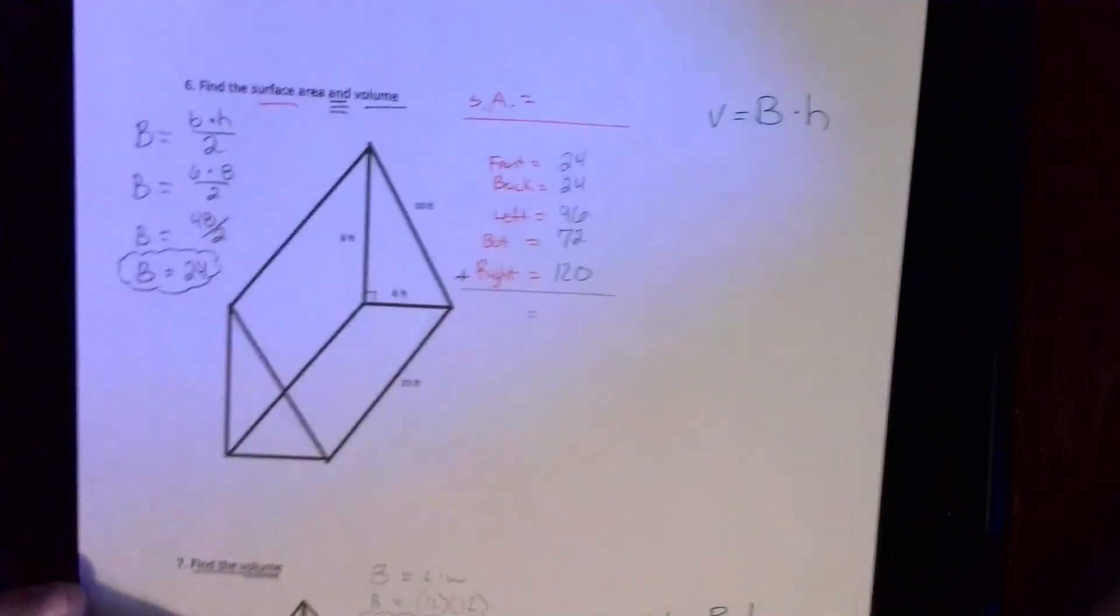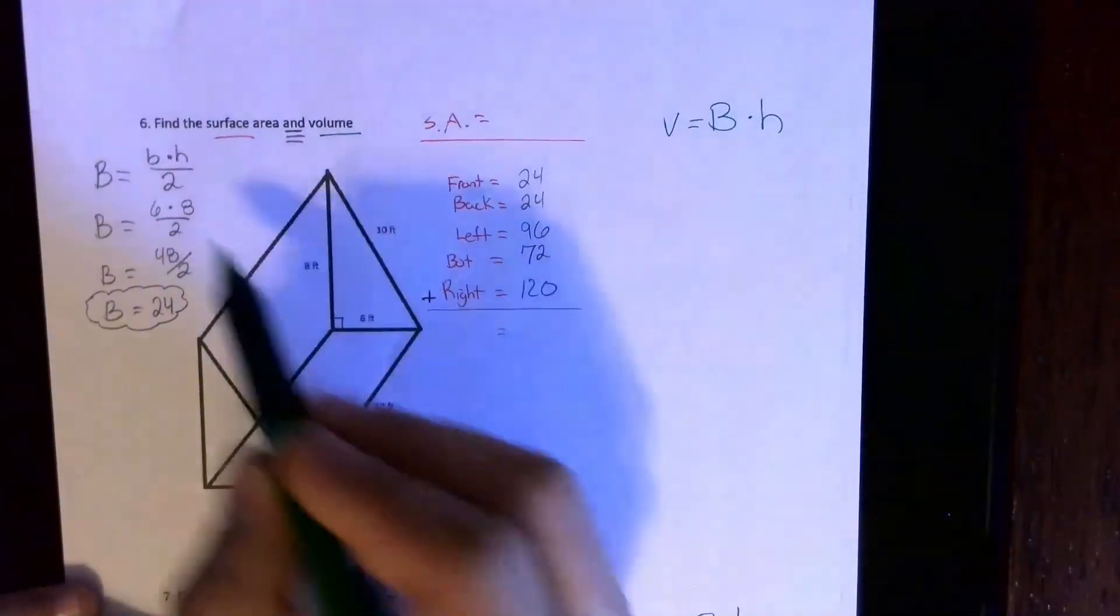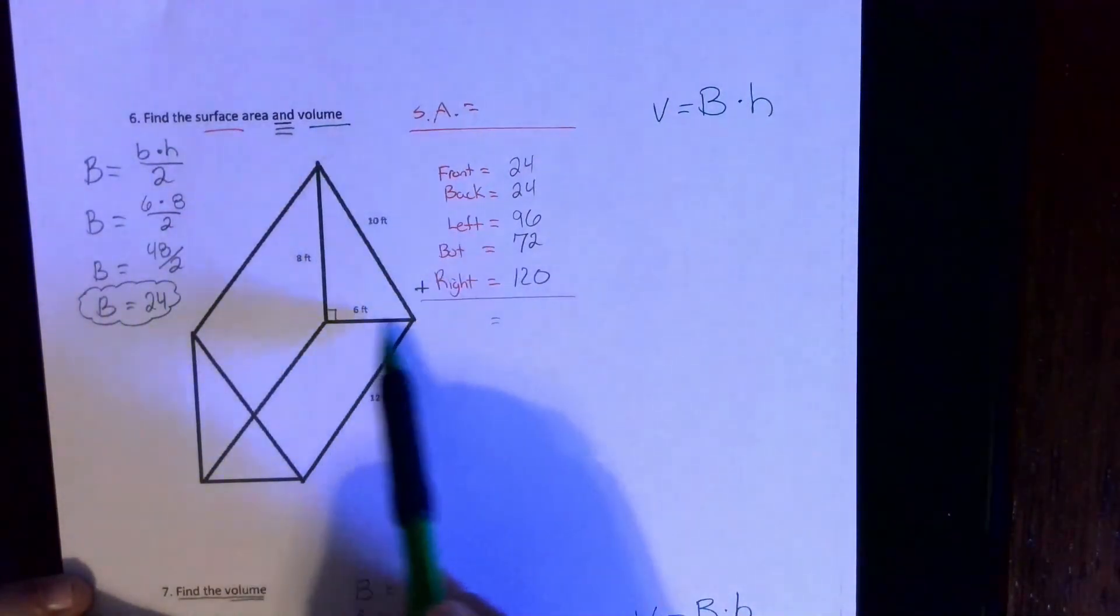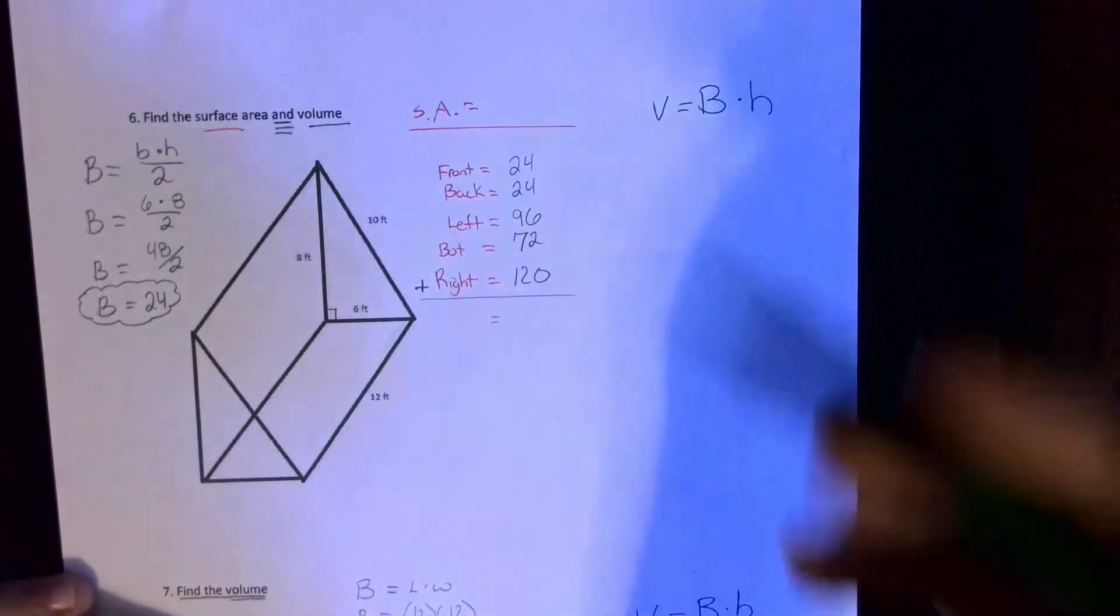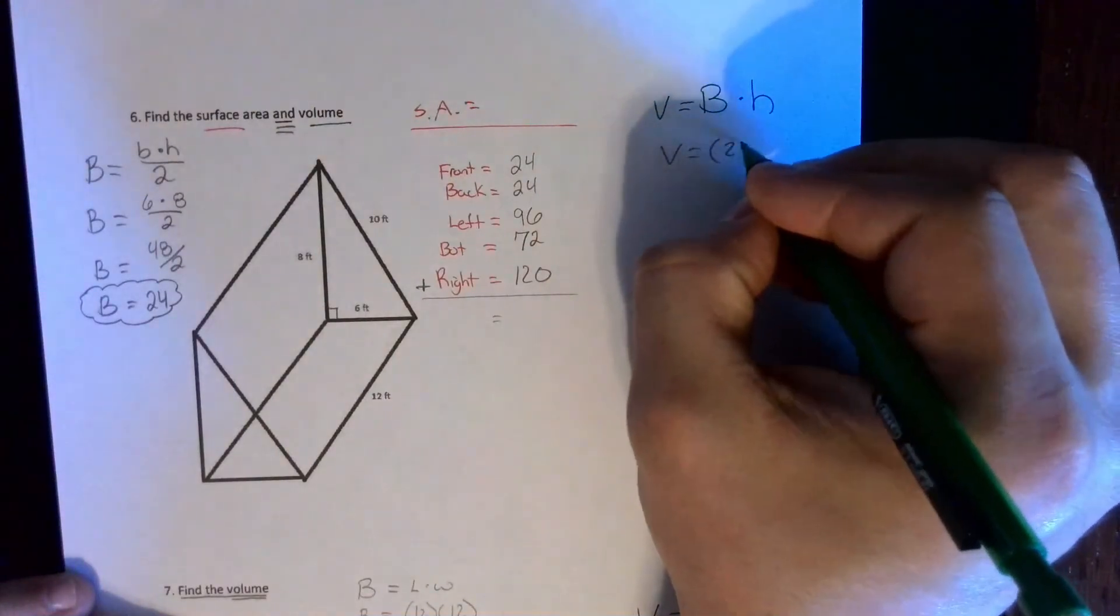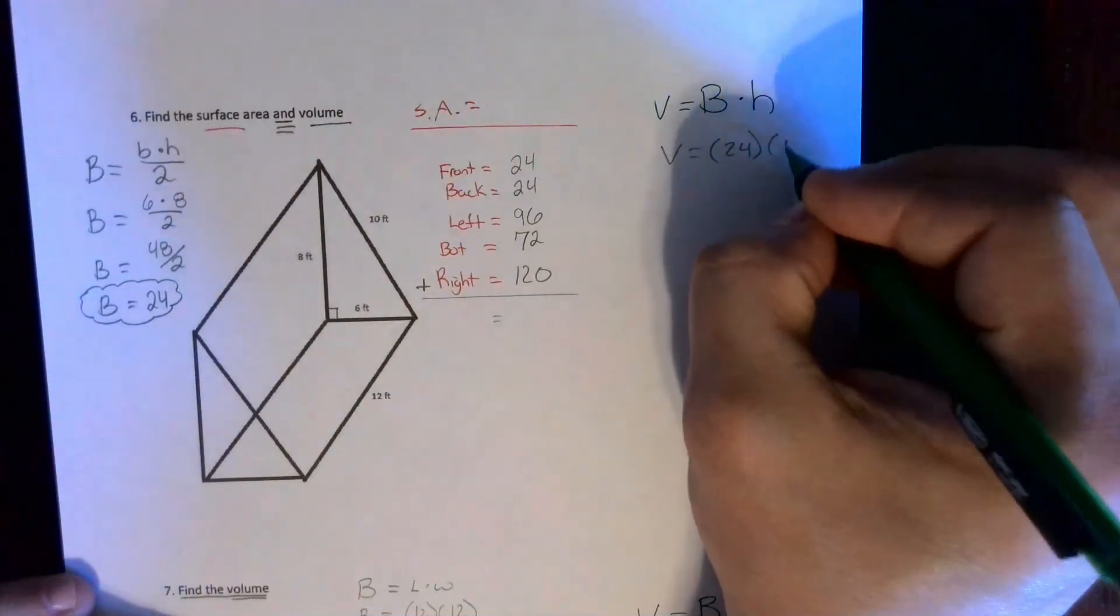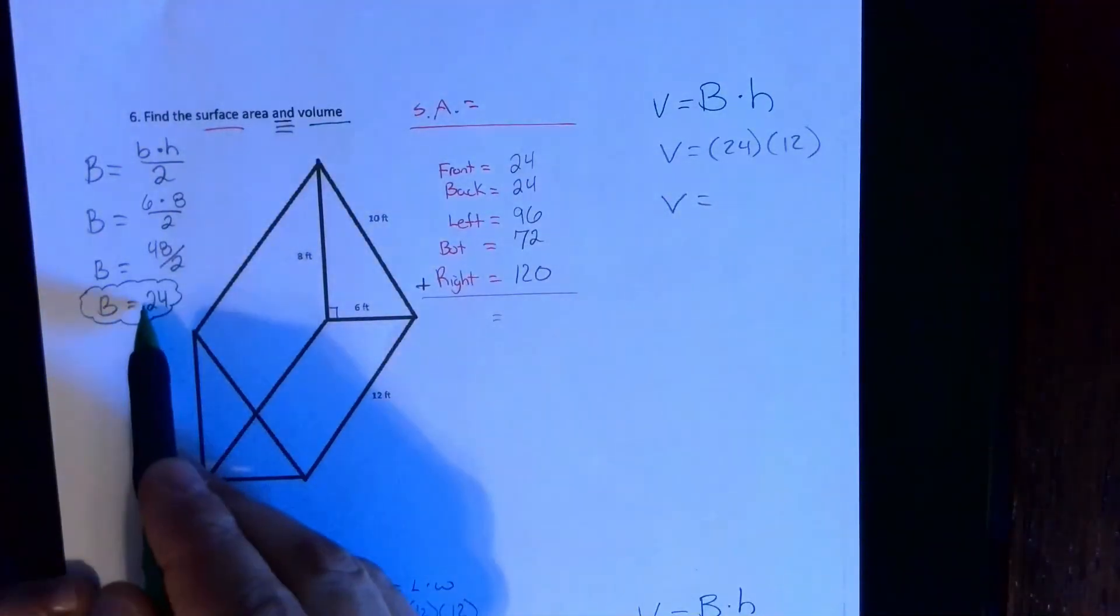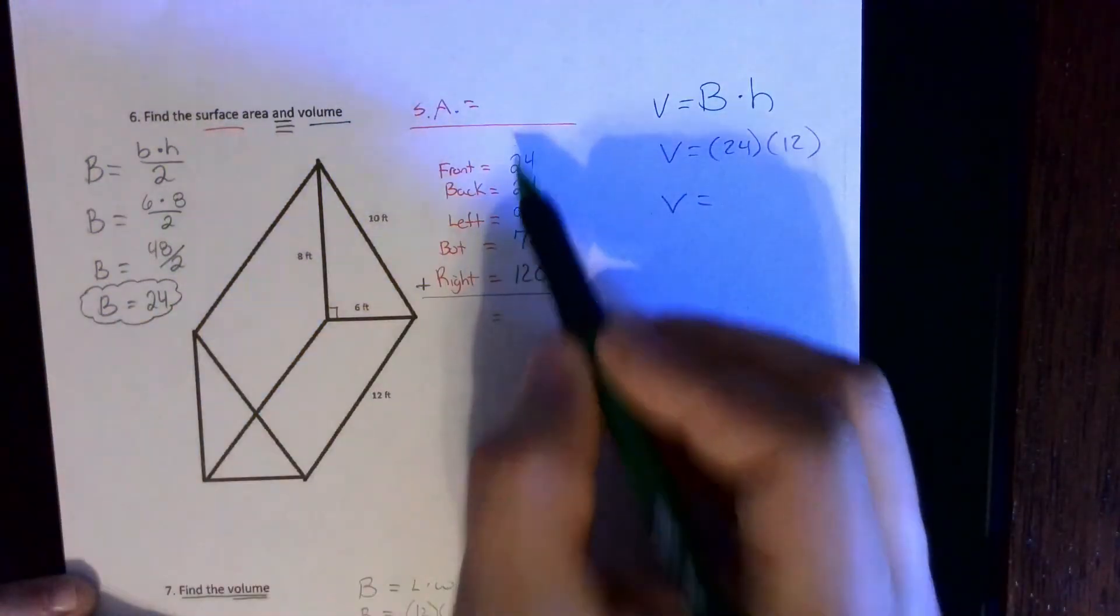Here's the information for number six. Again, surface area and volume for both of them. I had to find the area of these triangles, that's the area of the base. The area of the base is 24. I'll need it for this formula where the height is 12, that's how I do the volume, and I needed the triangles for the front and back for surface area.